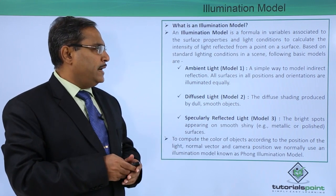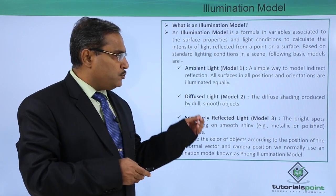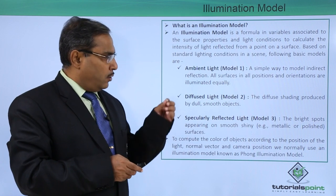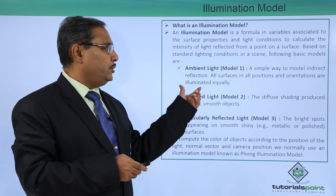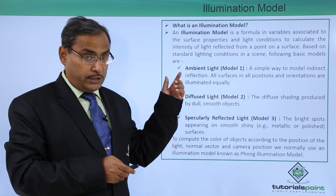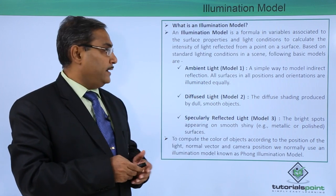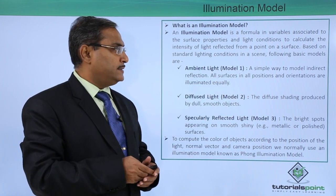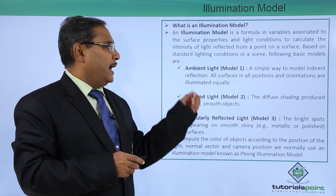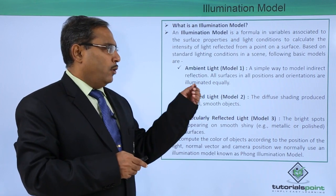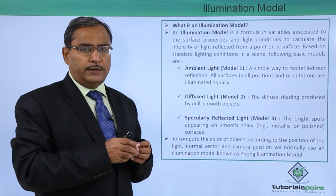The first one is the ambient light, also known as model 1. It is a simple way to model indirect reflection, where all surfaces in all positions and orientations are illuminated equally.